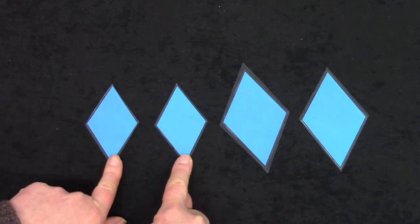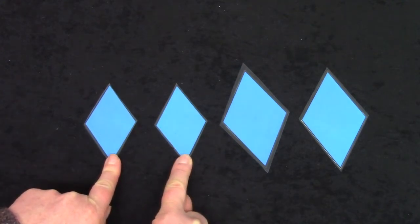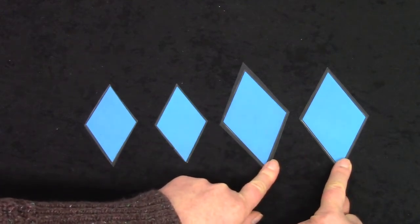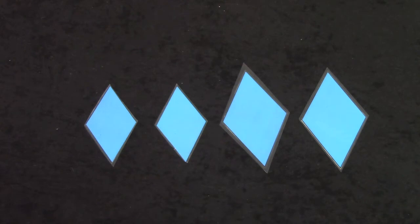Are these four shapes congruent? No. They are the same shape but they're not all the same size. These two shapes are congruent to each other and these two shapes are congruent because they are the same shape and the same size.